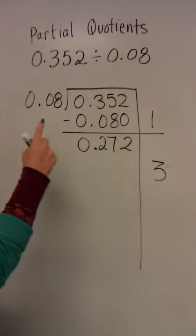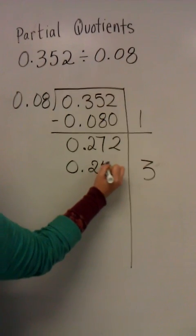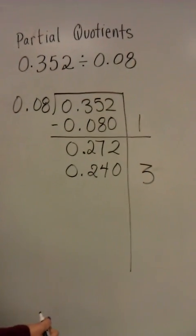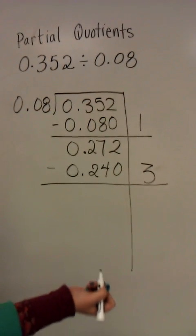So 3 times 8 hundredths is going to give me 240 thousandths or 24 hundredths.